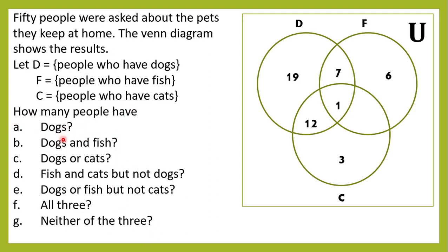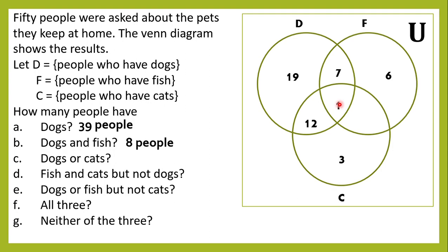First, how many people have dogs? The entire dog circle includes all its elements: 19 plus 1 plus 7 plus 12 equals 39 people who have dogs at home. Second, dogs and fish — the word 'and' means the intersection of dog and fish, the elements they have in common. Adding those shared elements: 7 plus 1 equals 8 people.